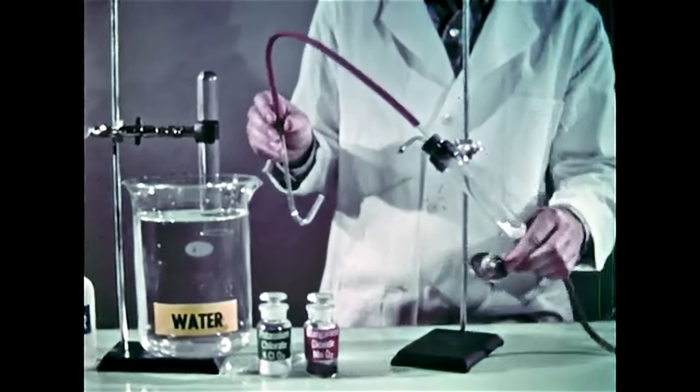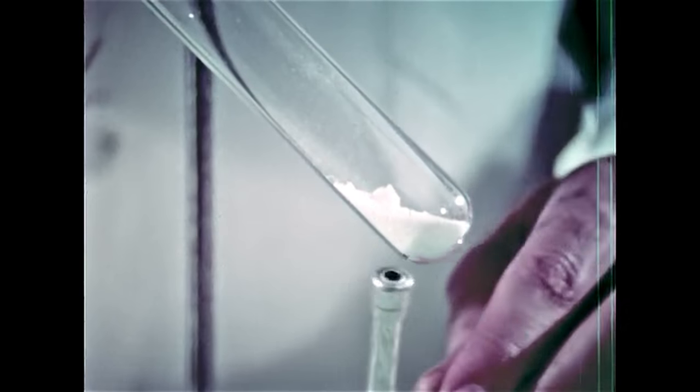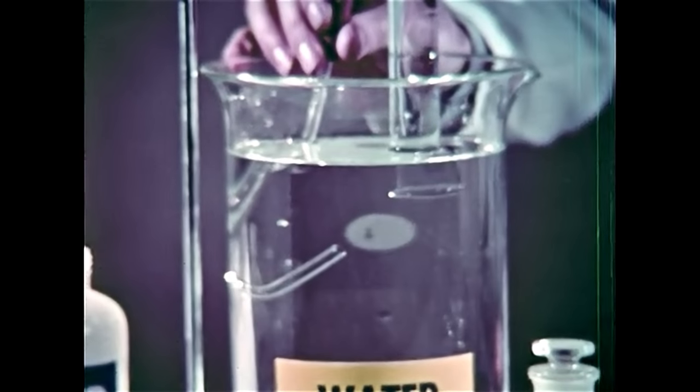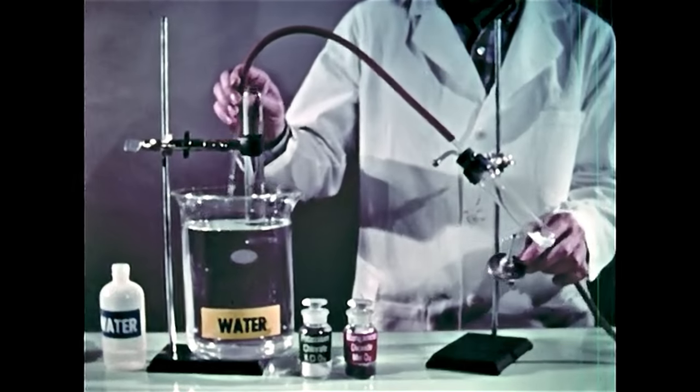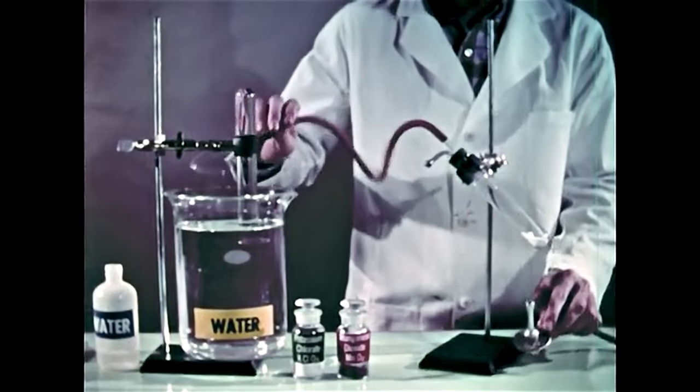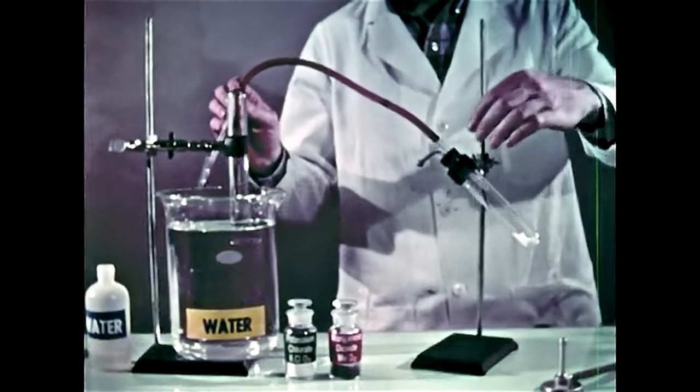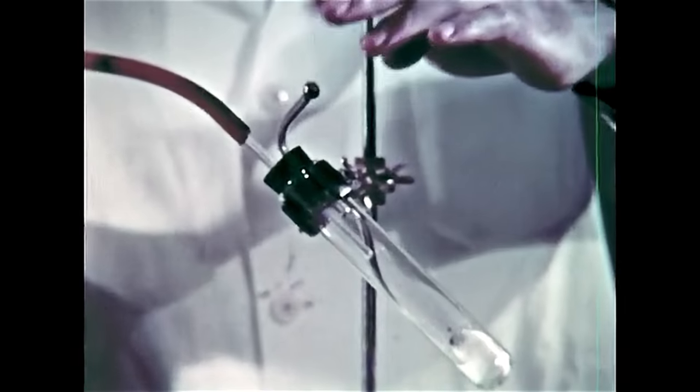Now the potassium chlorate is heated gently to get the air out of the delivery tube and to show that you won't get much reaction before adding the catalyst. Of course, if you heated the potassium chlorate well above its melting point, it would break down into the products potassium chloride and oxygen. But the catalyst saves both time and trouble.